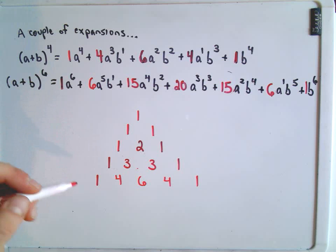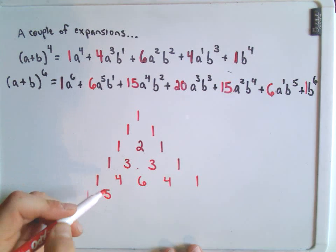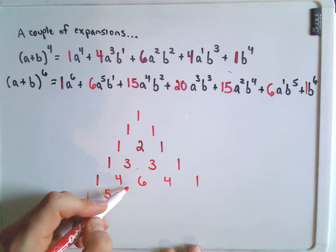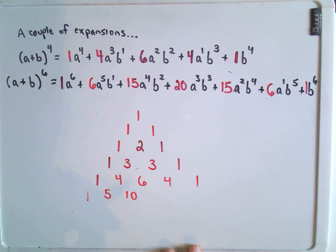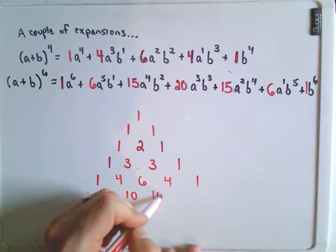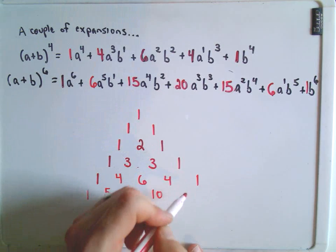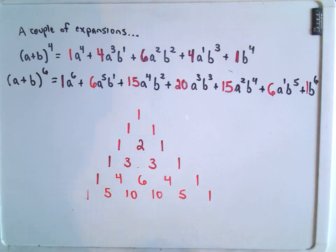So let's do two more. So we would have to the 5th power, excuse me, 1 and 4 would give us 5. 4 and 6 would give us a 10. 6 and 4 would give us another 10. 4 and 1 would be 5. And then we drop down our 1.